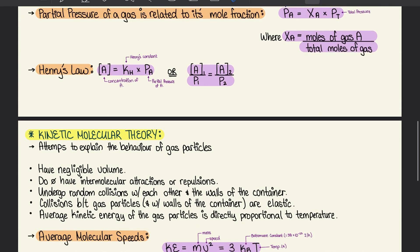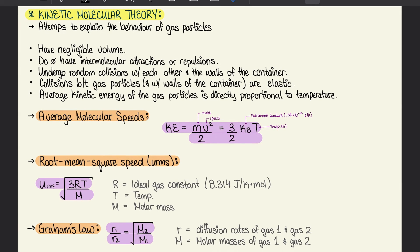Moving on to 8.3, we talk about kinetic molecular theory, which attempts to explain the behavior of gas particles. Gas particles have negligible volume and do not have intermolecular attractions or repulsions. They undergo random elastic collisions with each other and the walls of the container. The average kinetic energy of gas particles is directly proportional to temperature. Kinetic energy equals mv²/2, which we can expand to (3/2)k_B × T, where k_B is the Boltzmann constant, 1.38 × 10⁻²³ joules per Kelvin, and T is temperature in Kelvin.